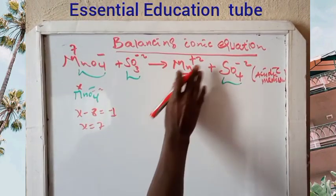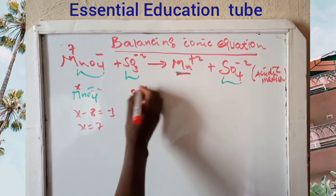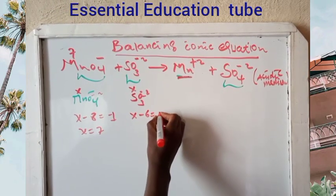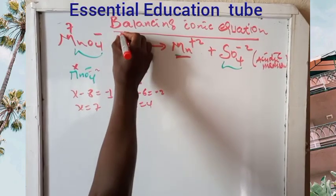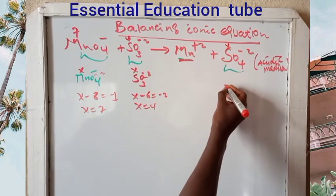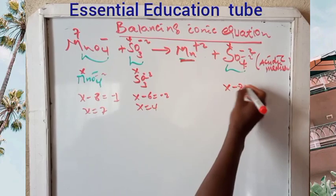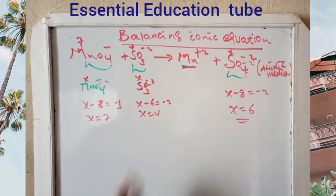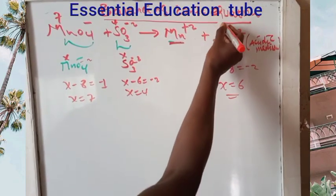The product has manganese at +2. For the oxidation number of sulfur: X minus 6 equals minus 2, so X equals +4. Further, X minus 2 times 4, that is minus 8, equals minus 2, so X equals positive 6. Sulfur here is +6.